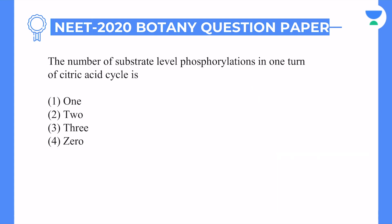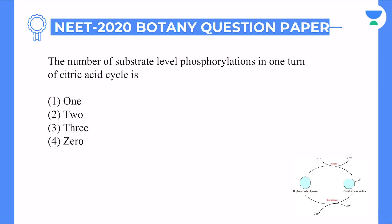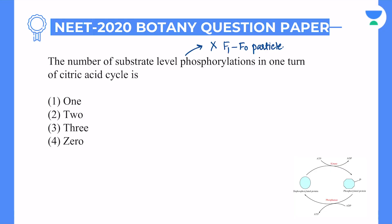The next question: the number of substrate level phosphorylations in one turn of the citric acid cycle. Substrate level phosphorylation means ATPase enzyme is not used — that means F1/F0 particle will not be used. We are not using ETS, that is electron transport system. So directly in the Krebs cycle, the citric acid cycle — how much ATP is made? There is no ATP directly; we get a GTP in it.